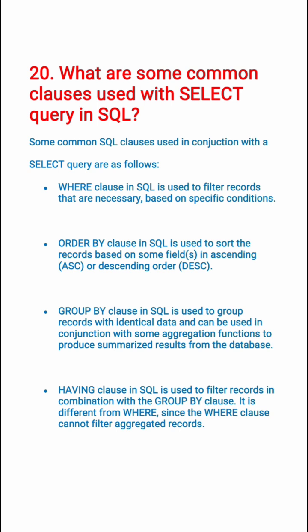The HAVING clause in SQL is used to filter records in combination with the GROUP BY clause. It is different from WHERE since the WHERE clause cannot filter aggregated records.